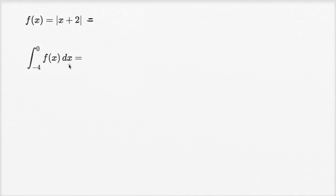When you first do this, you might stumble around a little bit because how do you take the antiderivative of an absolute value function? The key here is to rewrite f of x without the absolute value, and we can do that by rewriting it as a piecewise function.